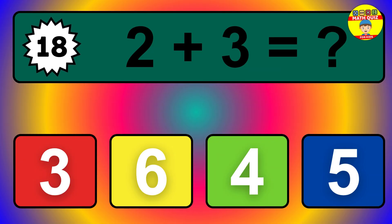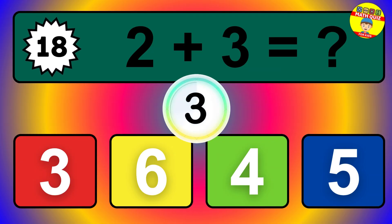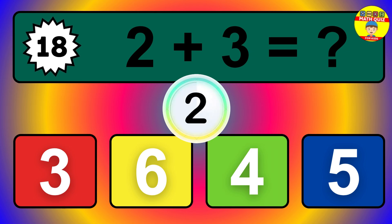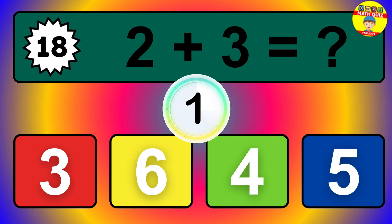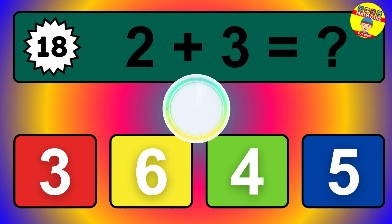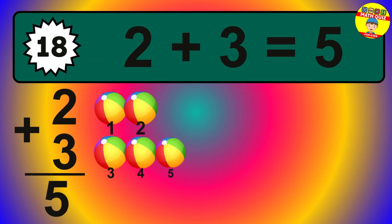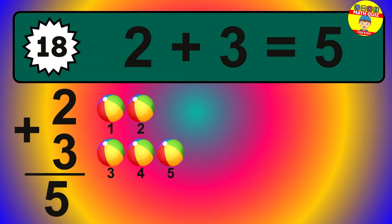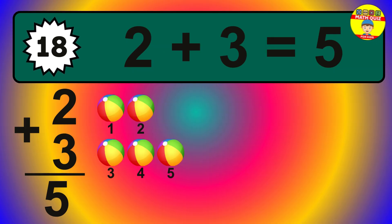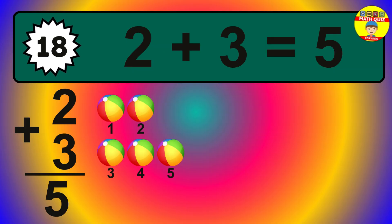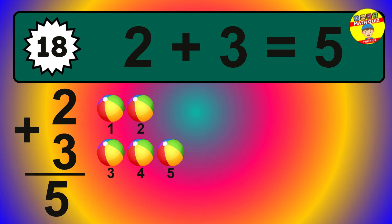Question 18. 2 plus 3 equals what? So the answer is 2 plus 3 is 5. Let's count it: 1, 2, 3, 4, 5.